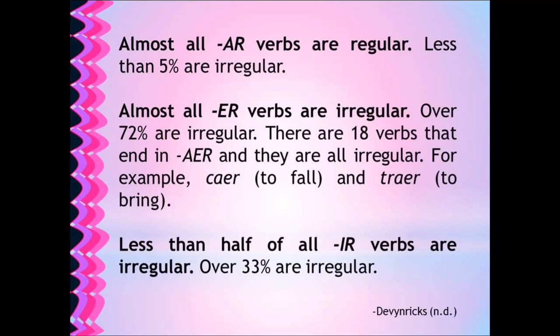Irregular verbs are those that undergo a change either in the root or in the corresponding endings of the tense, or in both root and ending of the tense. According to Devin Ricks, almost all AR-ending verbs are regular — less than 5% are irregular. Almost all ER-ending verbs are irregular — over 72% are irregular. There are 18 verbs that end in AER and they are all irregular, for example, caer (to fall) and traer (to bring). Less than half of all IR-ending verbs are irregular — over 30% are irregular. So while there are no steadfast rules, those numbers should give you a good idea of when to expect regular verbs. There are some tips and tricks you can keep up your sleeve that will help you understand irregular verb conjugation.